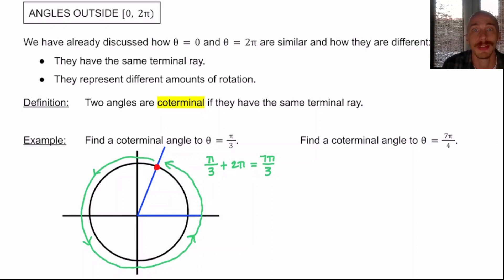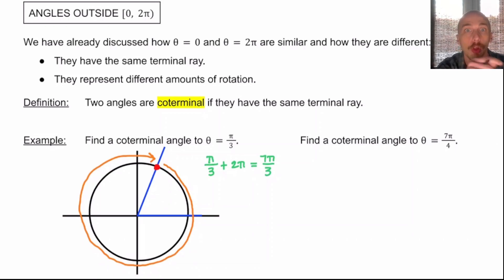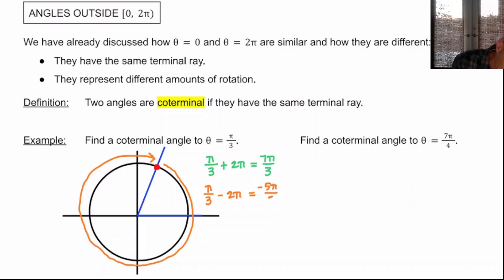I could also rotate in the clockwise direction, and remember, clockwise is negative angles, at least in standard position. So I'm saying I end up in the same spot if I subtracted 2π as well. π/3 minus 2π would be like taking π/3 minus 6π/3, and I'd get negative 5π/3. So those are two coterminal angles to θ = π/3.